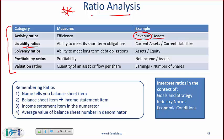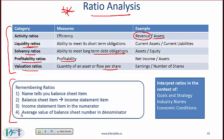Liquidity ratios tell us about a company's ability to meet short-term obligations. Solvency ratios tell us about a company's ability to meet long-term debt obligations. Profitability ratios tell us about the profitability of a company. Valuation ratios tell us about the quantity of an asset or flow per share. Here is a small trick for remembering the ratios.